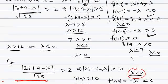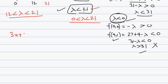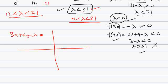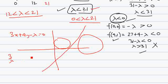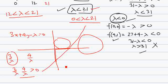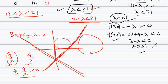One more thing: while lambda less than zero is not possible, we can verify geometrically. The equation is 3x plus 4y minus lambda equals zero. The x-intercept is lambda over 3 and the y-intercept is lambda over 4. The product of the intercepts is lambda squared over 12, which is greater than zero, meaning both intercepts must have the same sign. For lambda less than zero, both intercepts are negative, meaning both circles lie on the same side of the line — so such lines are not possible. That's why lambda less than zero is ruled out.